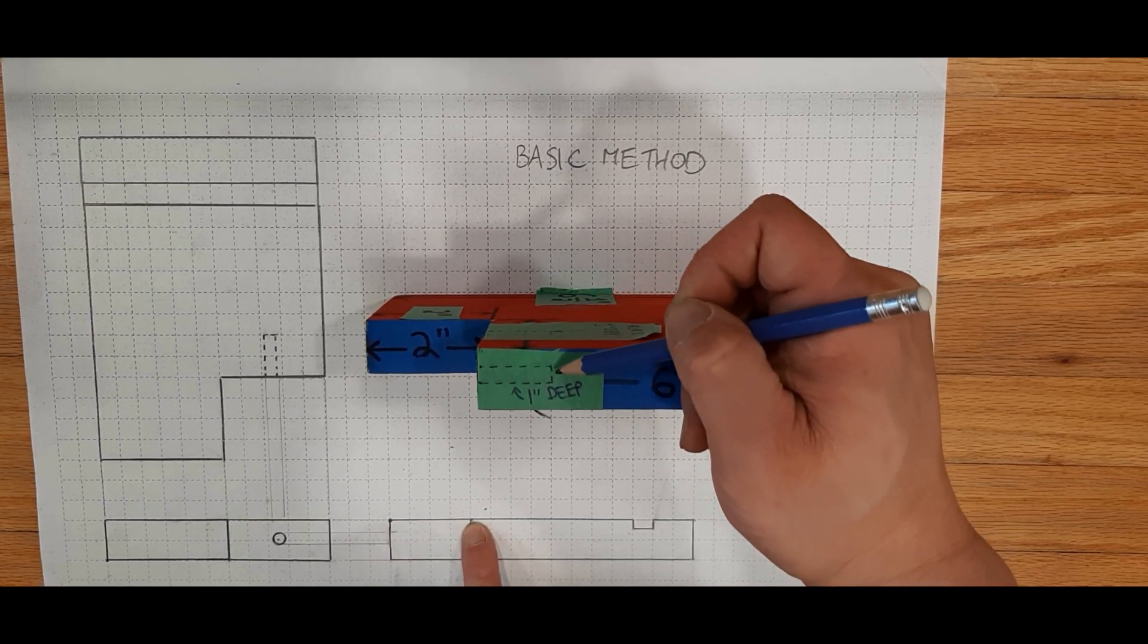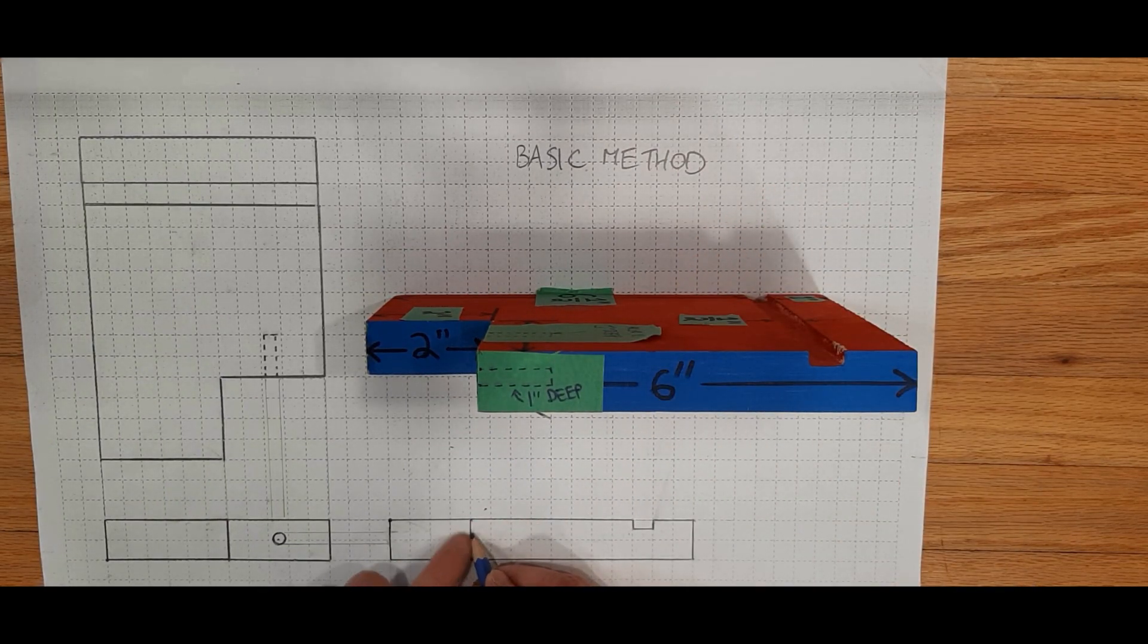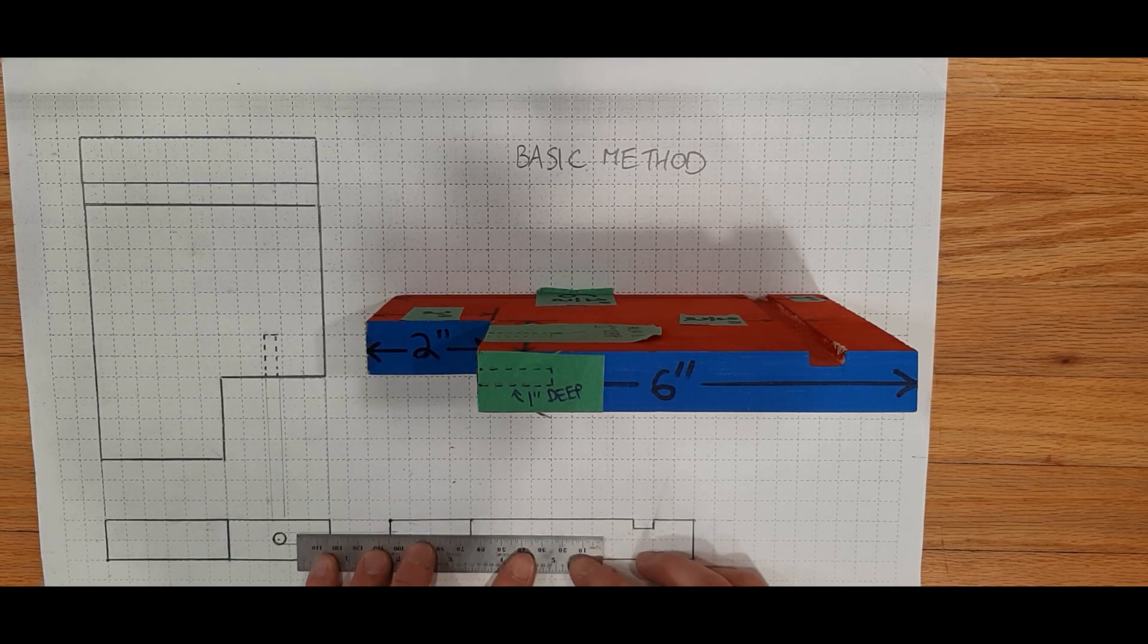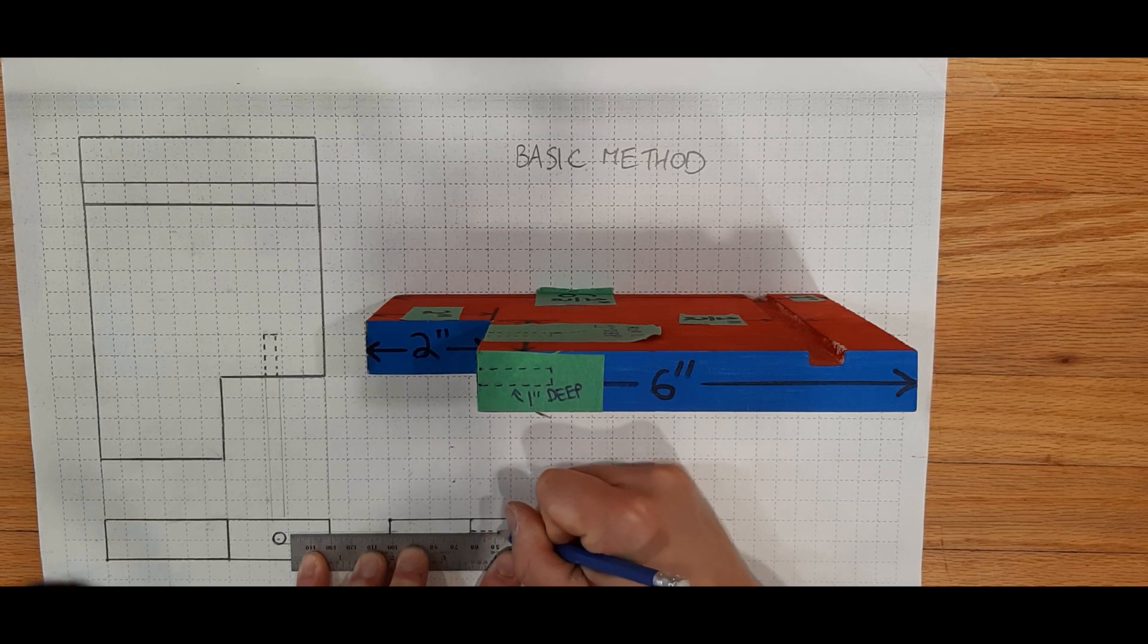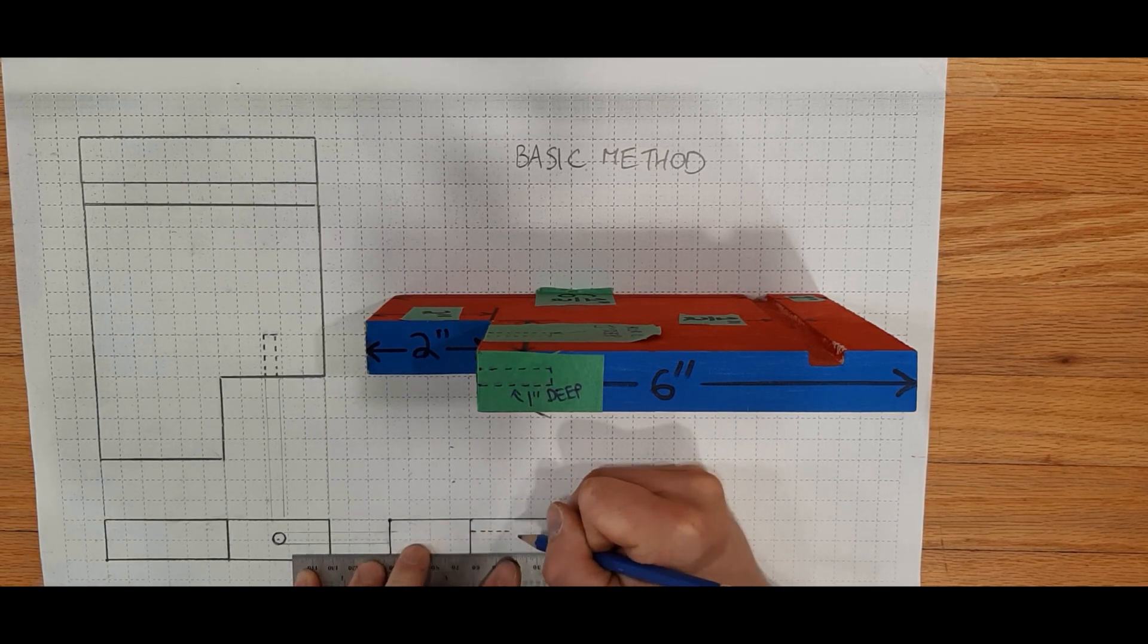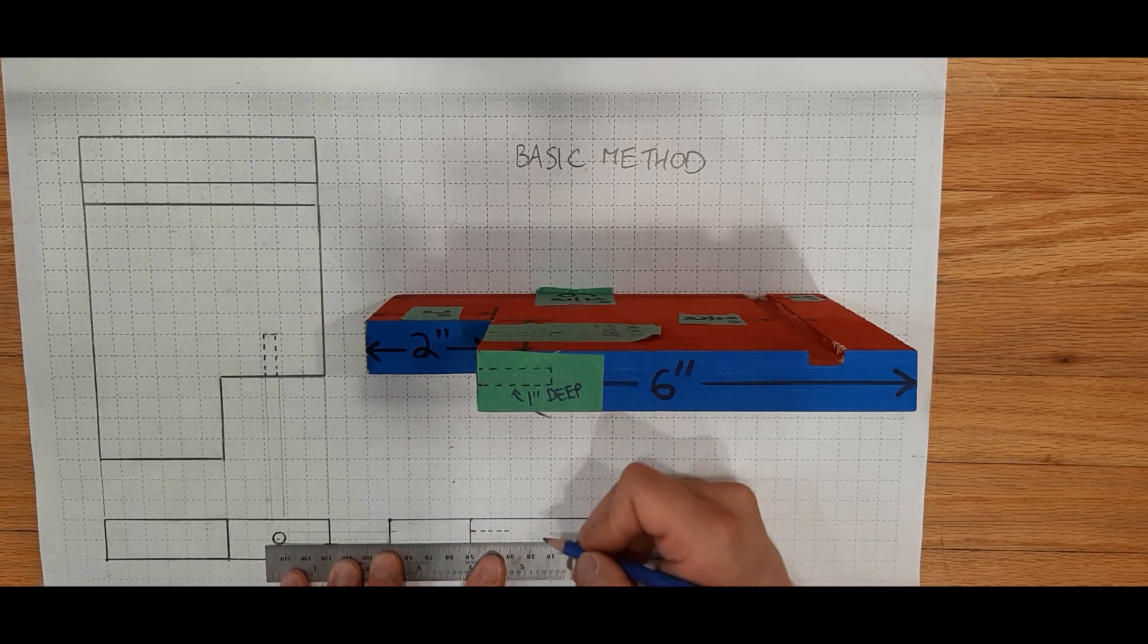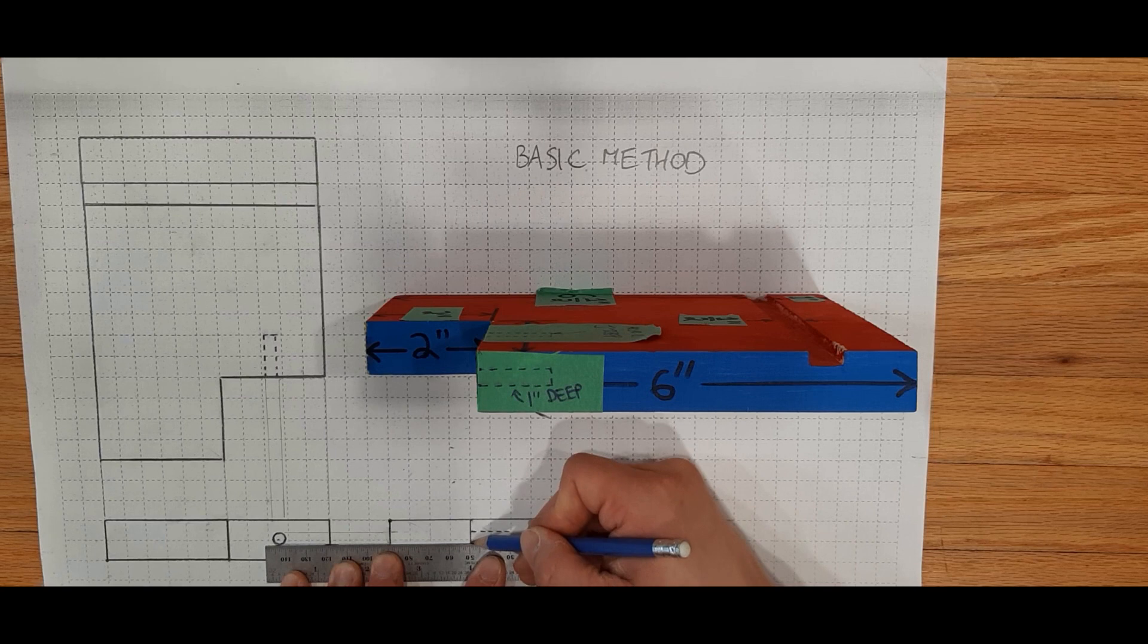And we know it's one inch deep, or one inch to the right, which means we need to go one inch from here to the right. Using our scale, that's two squares. So that's the first. That's the top of the hole. And you can see it lines up with the bottom.